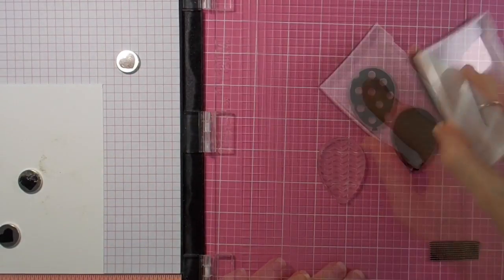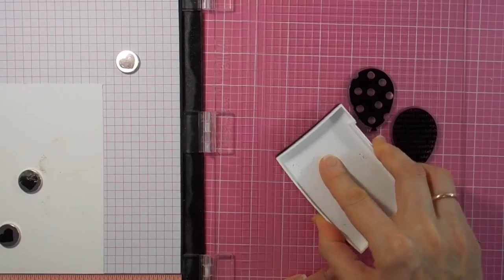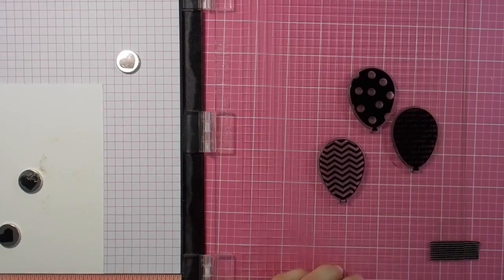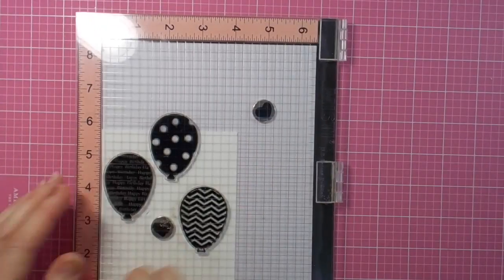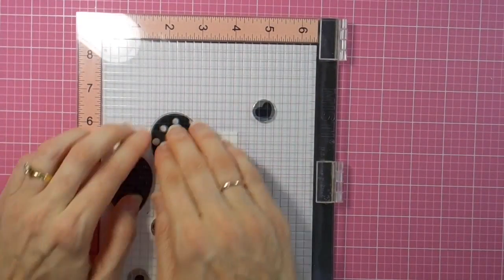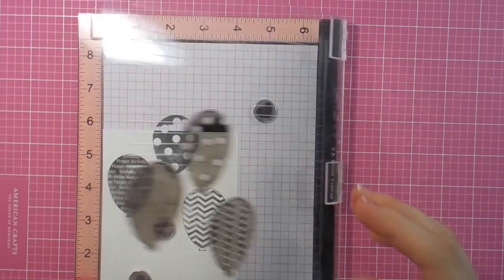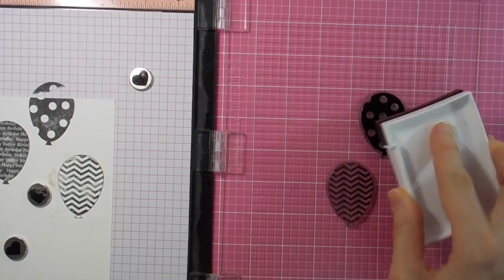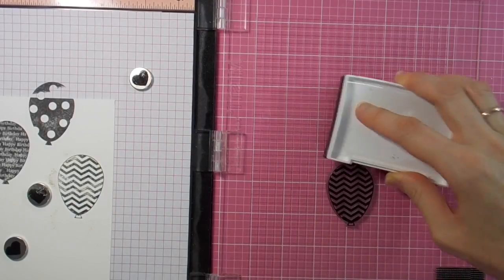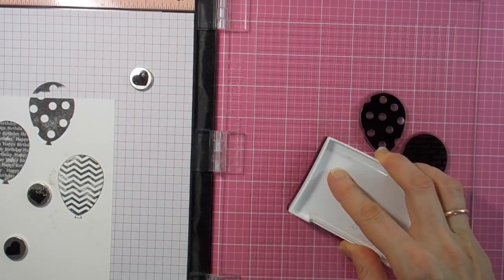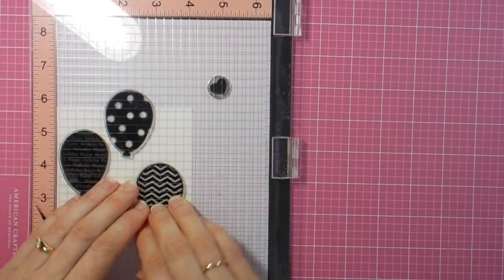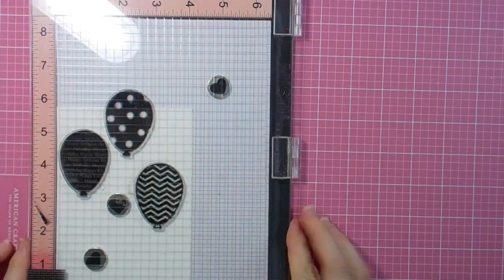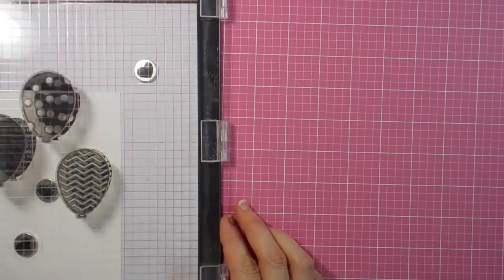I will be heat embossing these in clear, so I'm using VersaFine Onyx black ink. Being that I'm stamping on some Canson watercolor cardstock, I do need to ink up a few times to get a nice thick coverage because these are quite a large balloon stamp. So this is my second inking and I also do a third before I then use my clear embossing powder over the top.